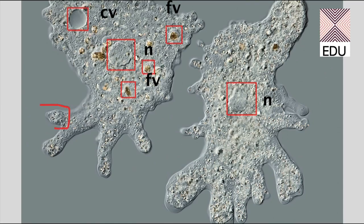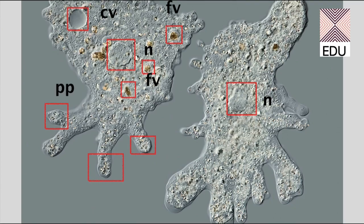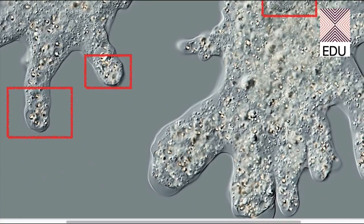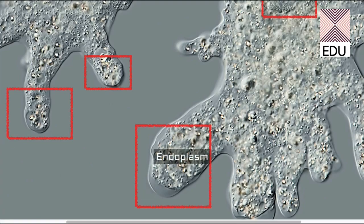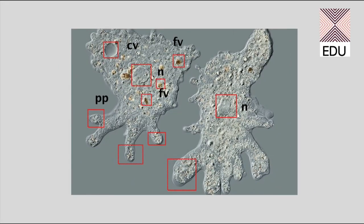This particular part is a pseudopodium, which is helping in the locomotion of the amoeba. This is again a pseudopodium, and here is another pseudopodium. Now I want to show you the ectoplasm and endoplasm. If you zoom into this particular pseudopodium, you can clearly see that the outer part is the ectoplasm and the inner part is the endoplasm. This is a very beautiful diagram of amoeba.